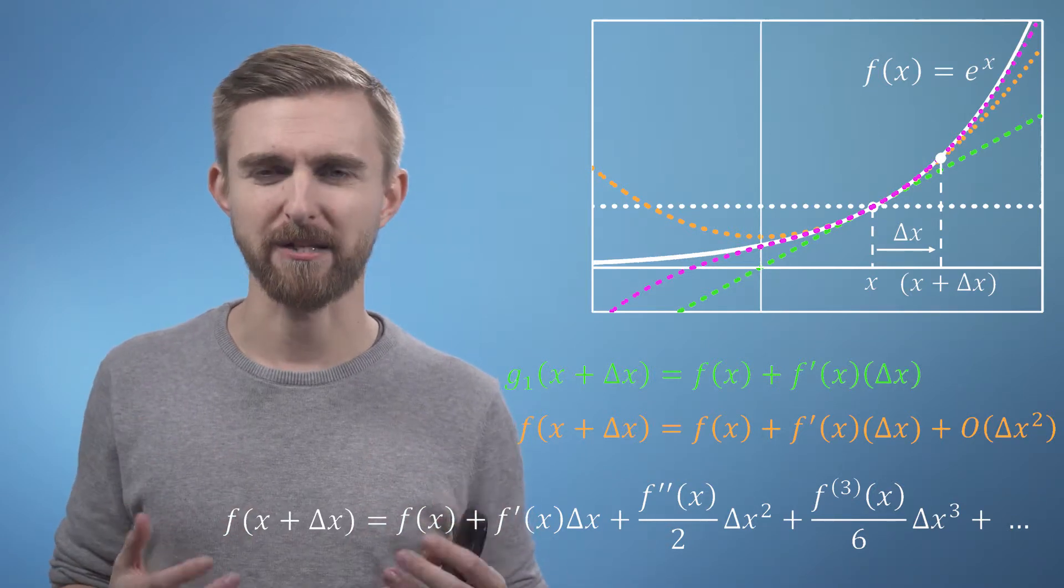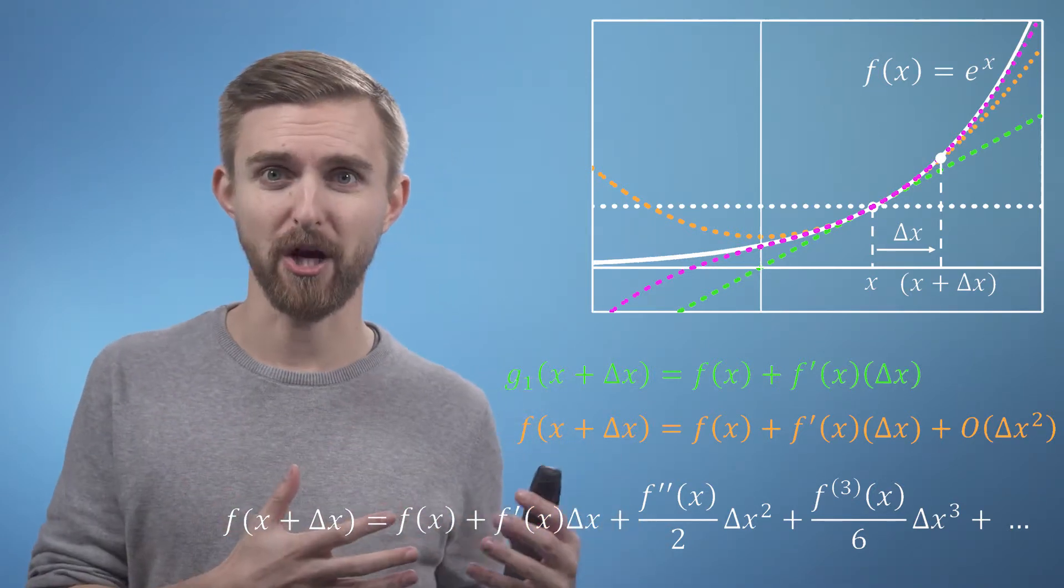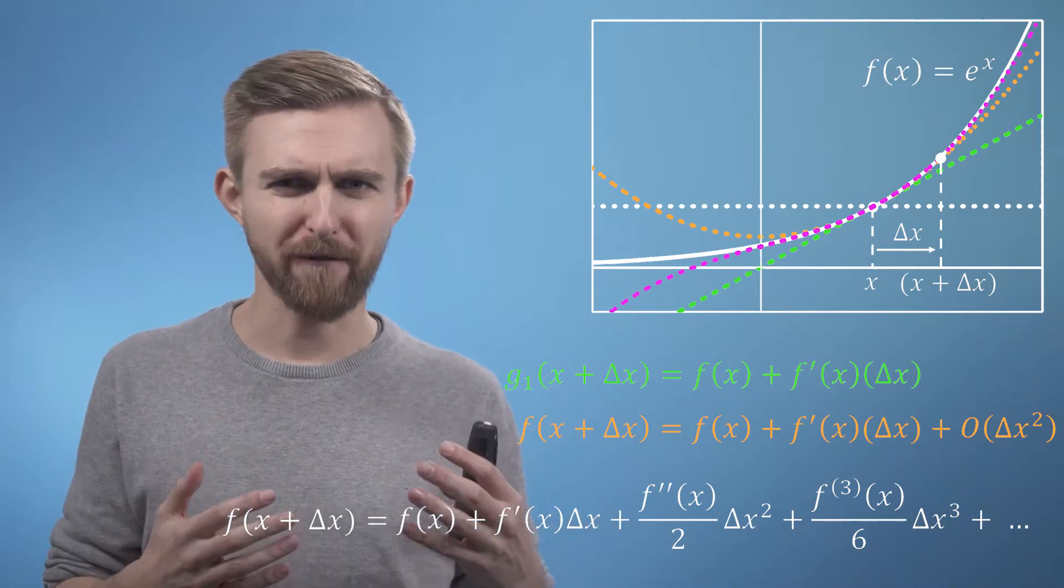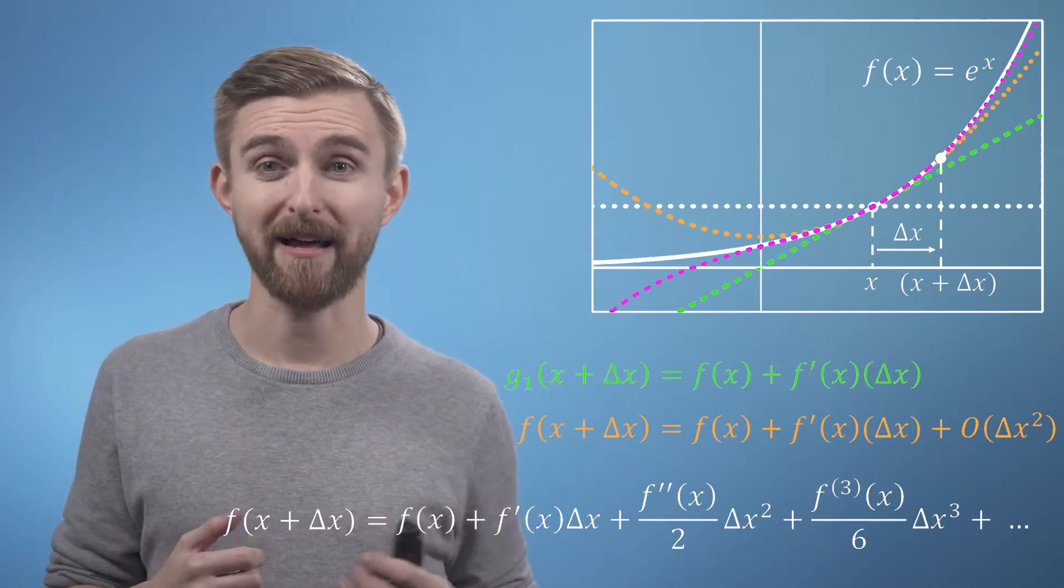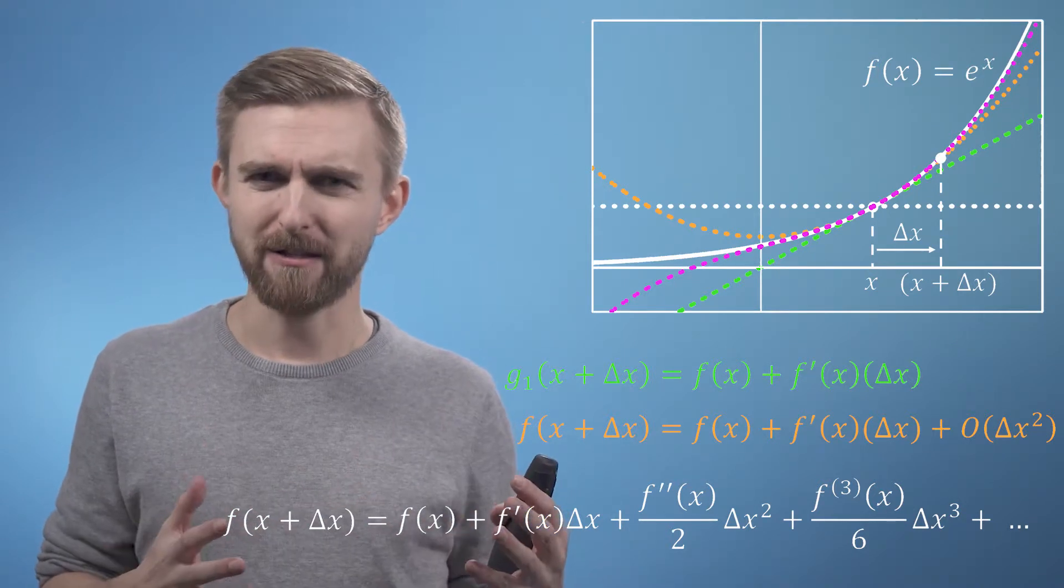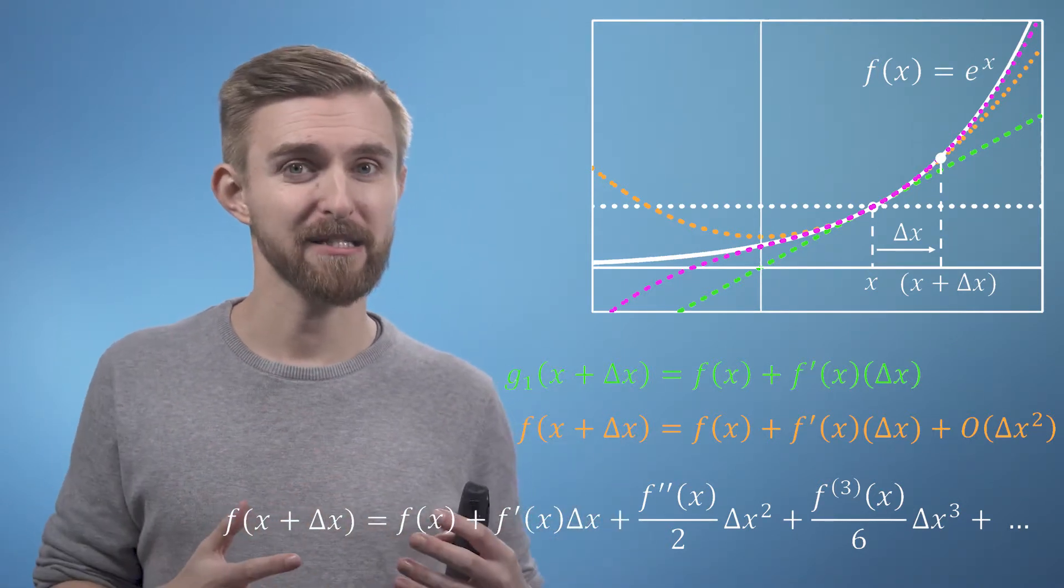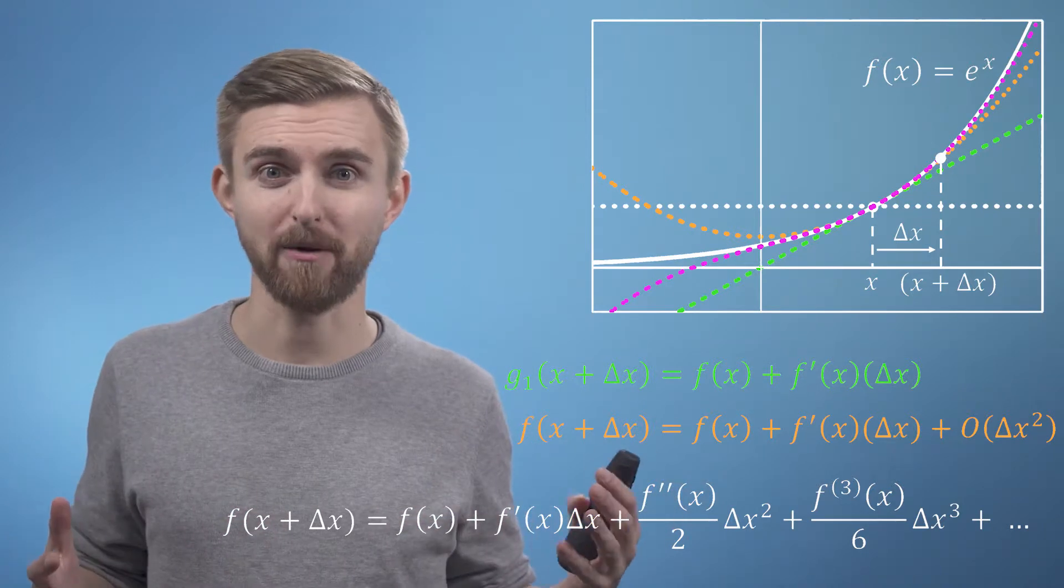This process of taking a function and ignoring the terms above delta x is referred to as linearization, and I hope it's now clear to you why that's the case. We've taken some potentially very nasty function and just approximated it with a straight line.